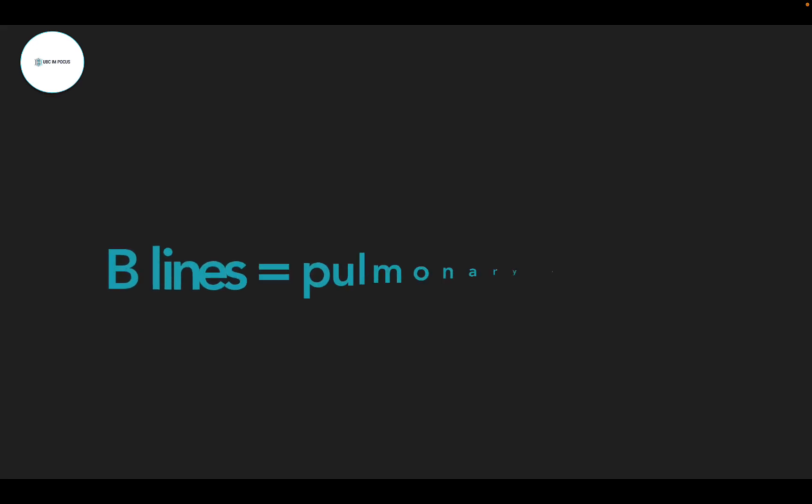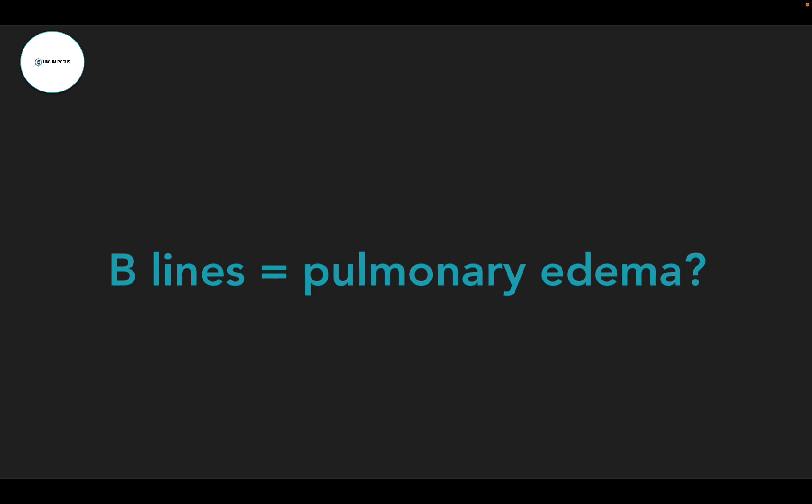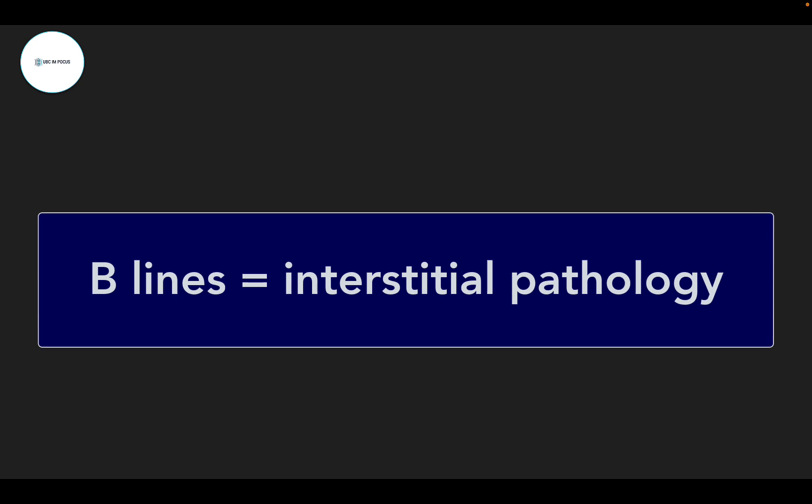So you've managed to generate some B-lines — now B-lines mean pulmonary edema, right? If you're watching this screencast, you realize there's more to it than that. Please remember that B-lines can be more than just pulmonary edema. There's been some push in the ultrasound community to move away from the term B-line and use 'vertical artifacts' instead, because in some people's minds B-lines are so synonymous with pulmonary edema — though I still use the term B-line.